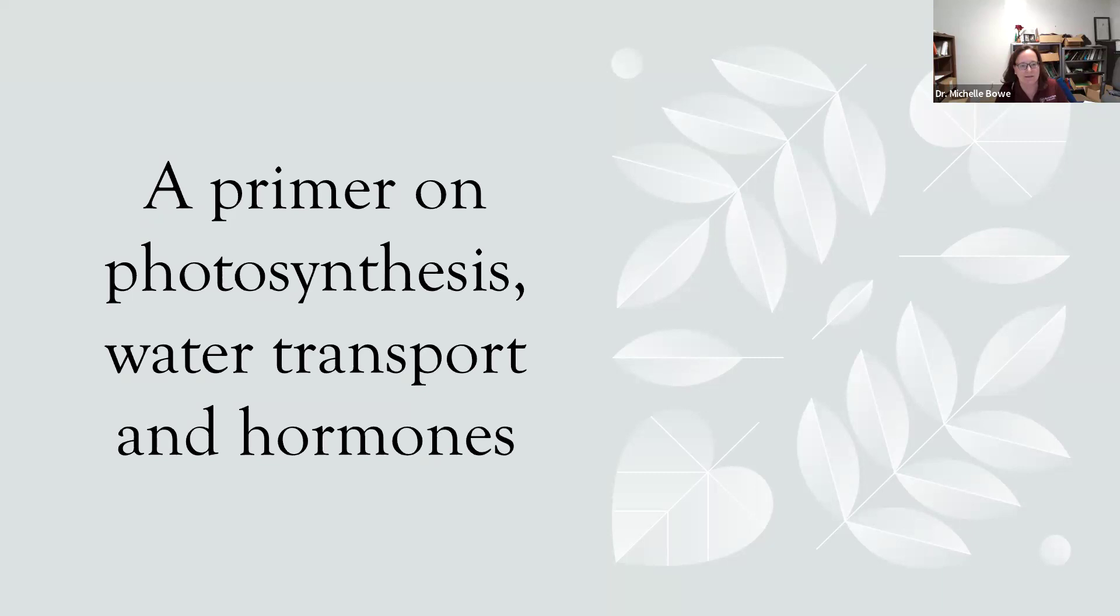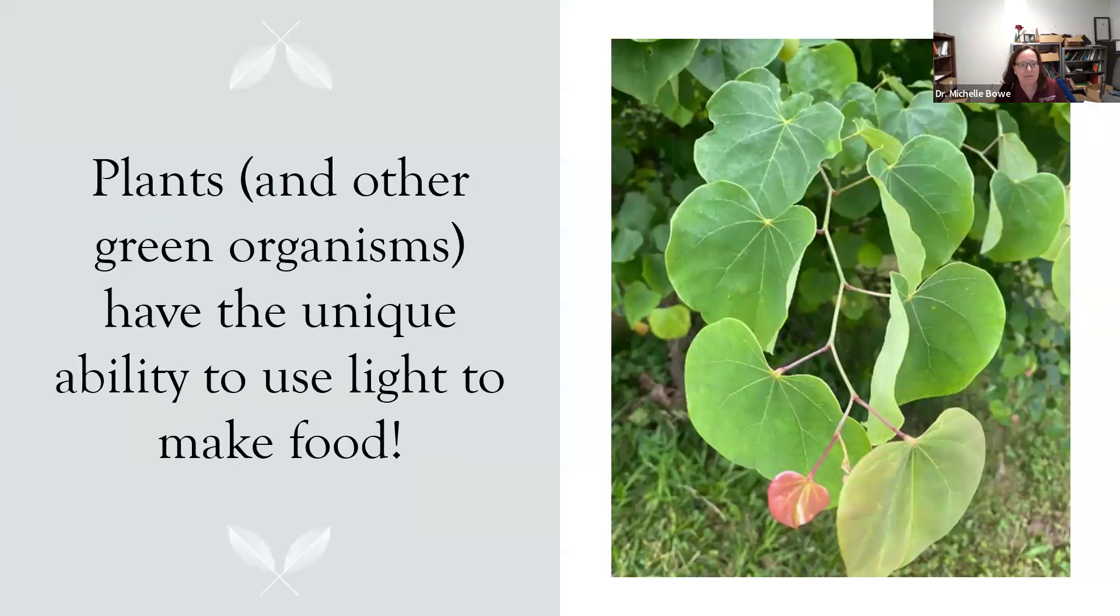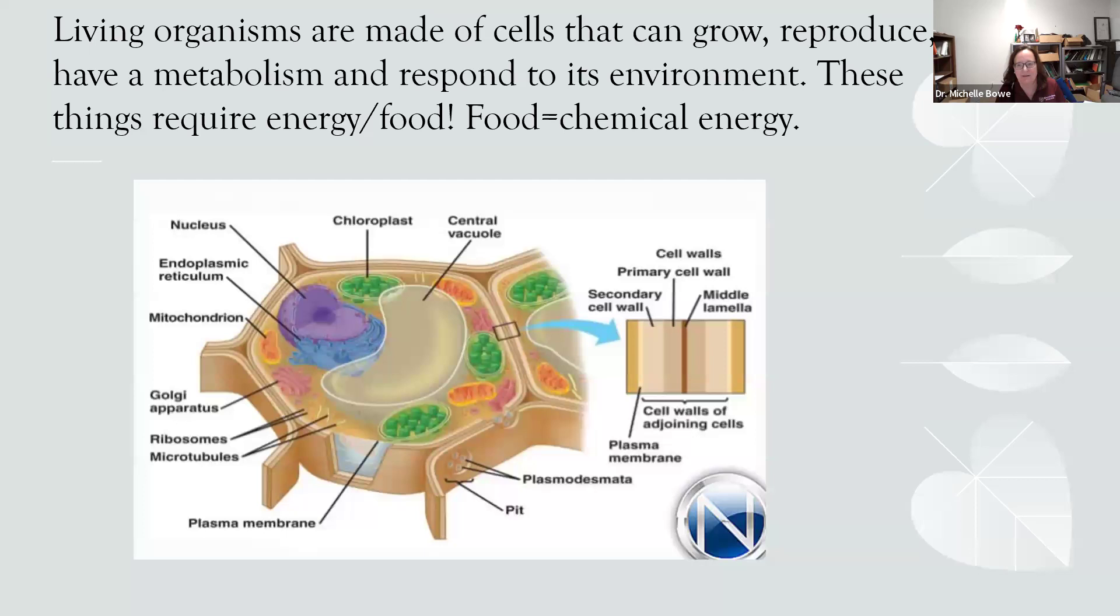I'm going to be talking about some very basic things about photosynthesis, a little bit about water transport, and a very small amount about the hormones that control all these things. Plants and other green organisms like algae have the unique ability to use light to make food. The food starts off generally in the form of sugar, but other things are made too, and that gives us food for all life on Earth. The unique part is the light-using part, because all living organisms are made up of cells that can grow, reproduce, have metabolism, and respond to their environment. All of these things require some kind of energy, which is typically stored in the form of food, which we call chemical energy.